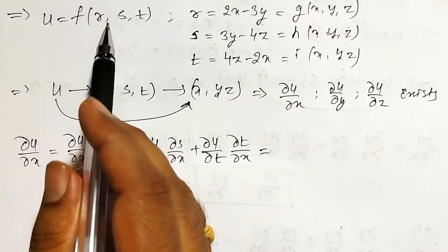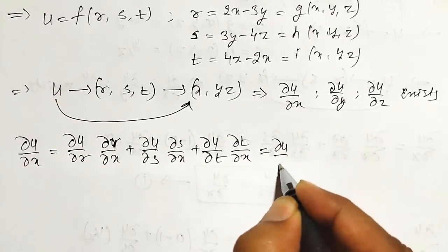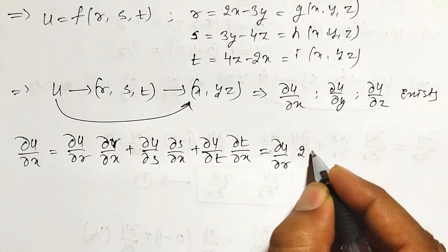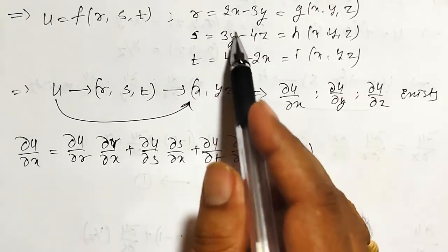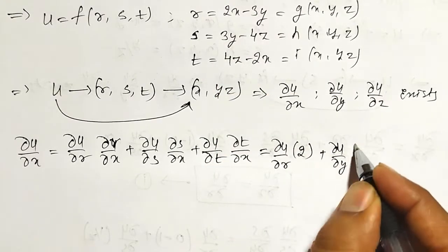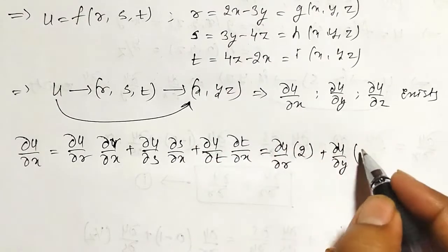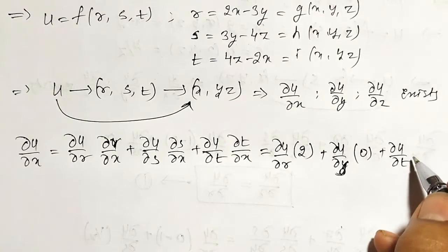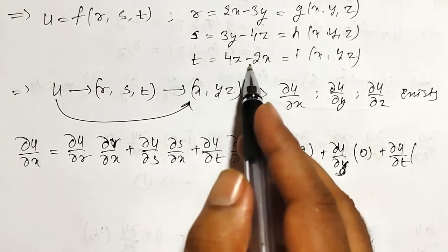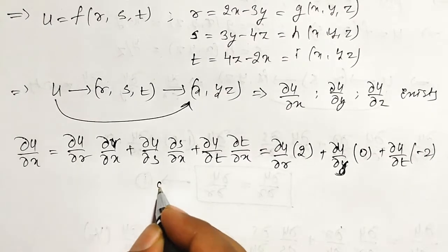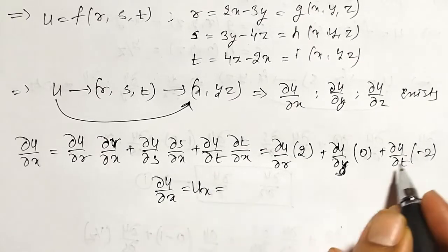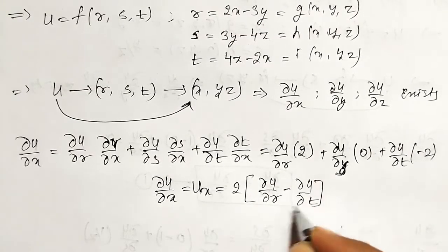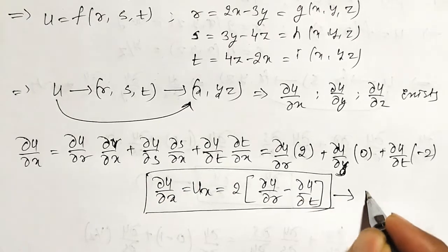Then how to find out these partial derivatives? ∂u/∂r — u is a function of f, not defined clearly, so I will write it as ∂u/∂r as it is. ∂r/∂x: r is 2x minus 3y, therefore it is 2. Plus ∂u/∂s · ∂s/∂x — no x term is there in s, therefore it is 0. ∂u/∂t · ∂t/∂x: t is 4z minus 2x, so ∂t/∂x is minus 2. Therefore, ∂u/∂x, or u_x, can be written as 2(∂u/∂r) minus 2(∂u/∂t), taking 2 common: 2(∂u/∂r − ∂u/∂t). This is equation 1.